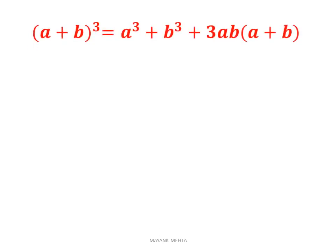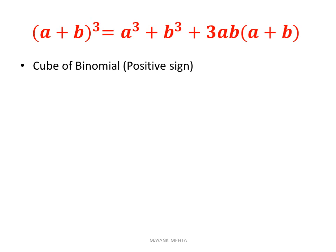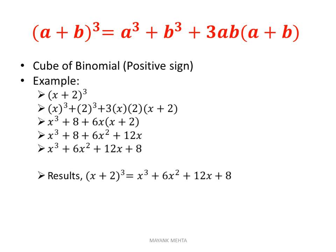Now the next identity is (a+b)³, which equals a³ + b³ + 3ab(a+b). Write these identities in your notebook — it will be very helpful when you solve questions. This is the cube of a binomial with a positive sign. For example, (x+2)³: it will be x³ + 2³ + 3 × x × 2 × (x+2).